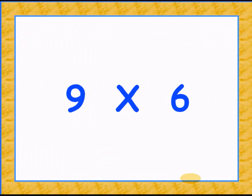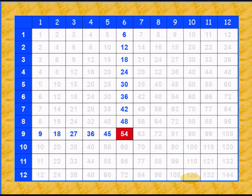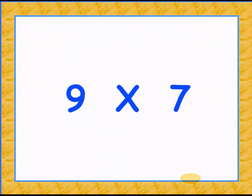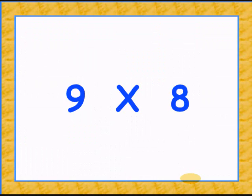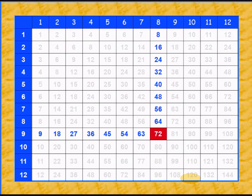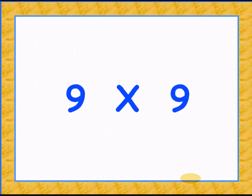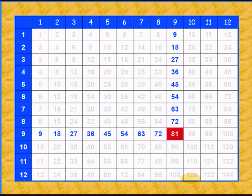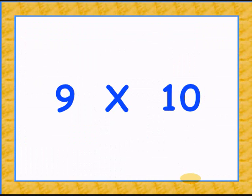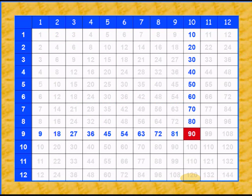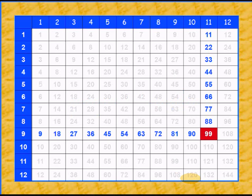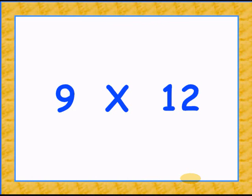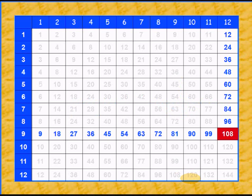9 times 6 is 54. 9 times 7 is 63. 9 times 8 gives 72. 9 times 9 is 81. 9 times 10 gives 90. 9 times 11 is 99. 9 times 12 gives 108.